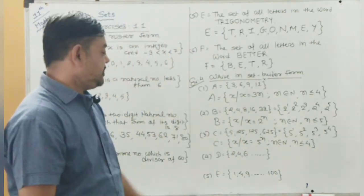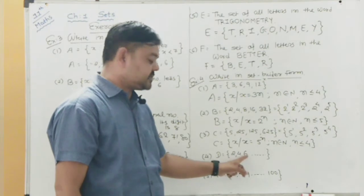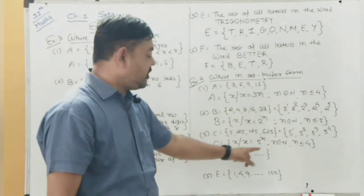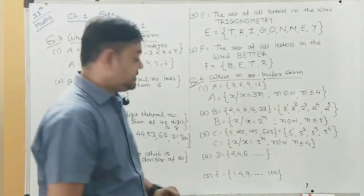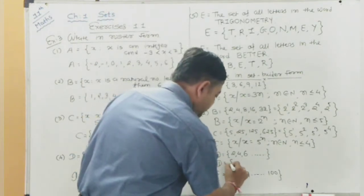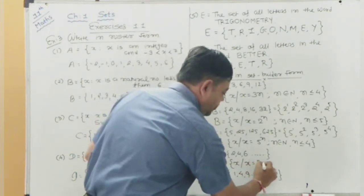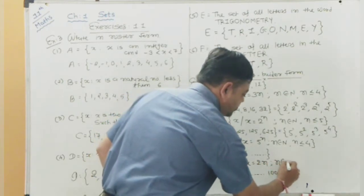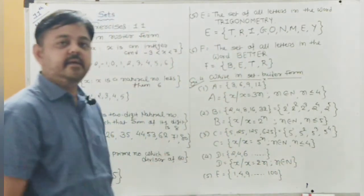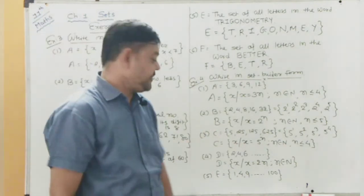Set D = {2, 4, 6, 8, ...} — all even numbers. You can write: D = {x : x = 2n, n ∈ N}. Since it is an infinite set, no upper limit on n.